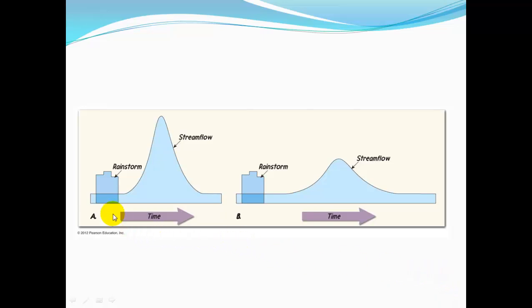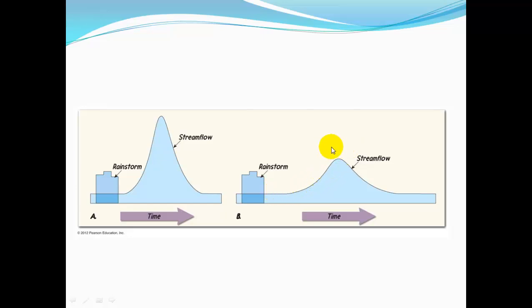If we have a stream that tends to flood, putting in a dam holds back the water and slowly releases it, delaying the rise and peak stream flow. If you delay it enough, you can keep it from going over the top of the bank. That's what we try to do with dams and gates.